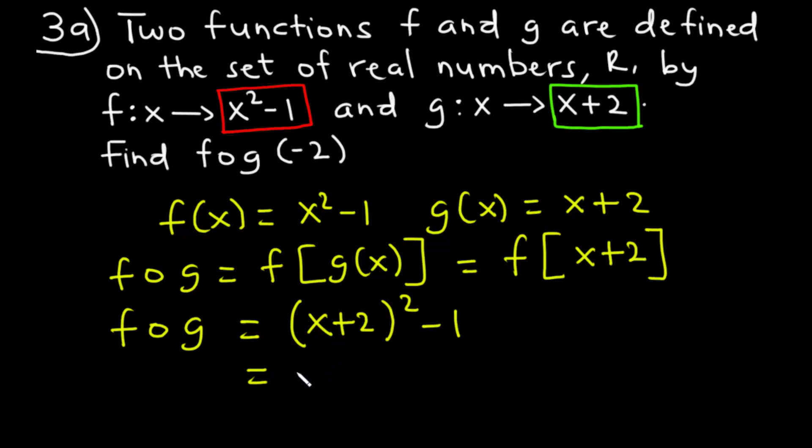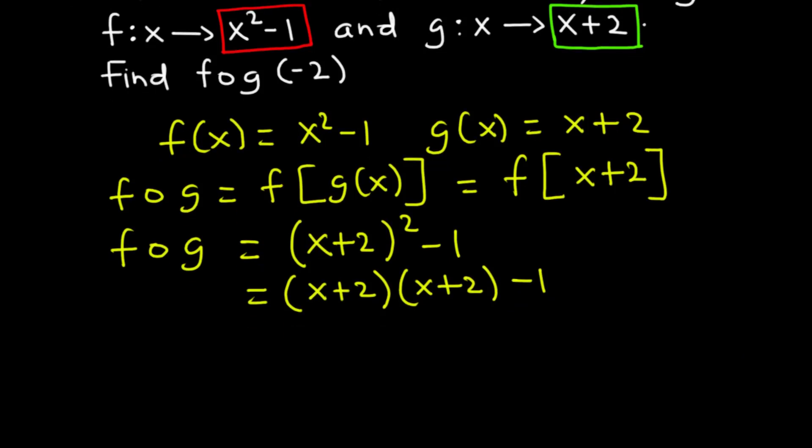(x + 2)² is the same as (x + 2)(x + 2), then minus 1. x times x is x². x times 2 is 2x. 2 times x is 2x. 2 times 2 is 4. Then minus 1. So we have x² + 2x + 2x + 4 - 1 = x² + 4x + 3. That is f∘g.